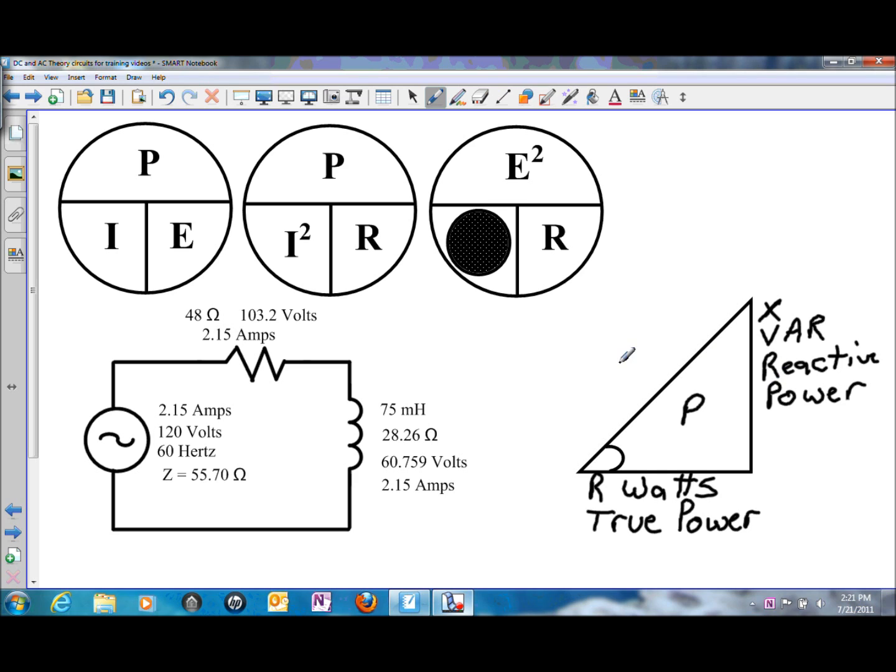And then the last side, your totals, is going to be volt amps or apparent power. So now that we know the three different sides, regardless of what they are called, you can take two sides and solve for the third side, just like all other triangles that have been used.